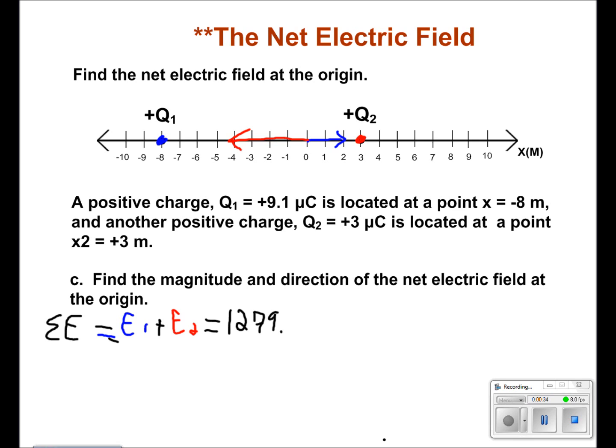From here, we will plug in our values. This will give us our final answer of 1720.313 newtons per coulomb.